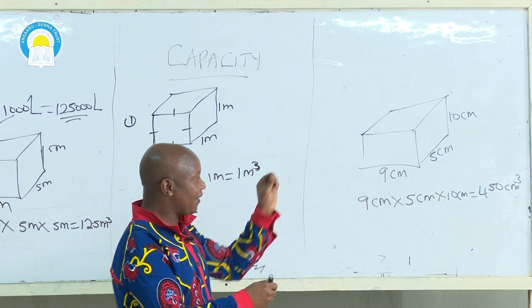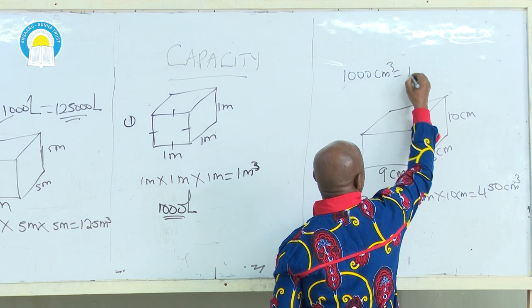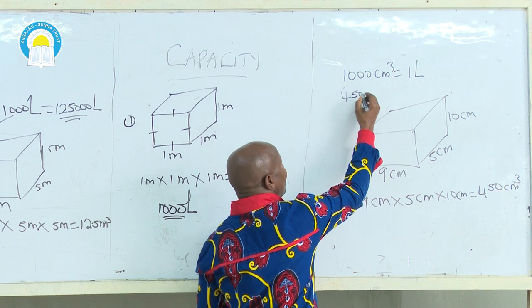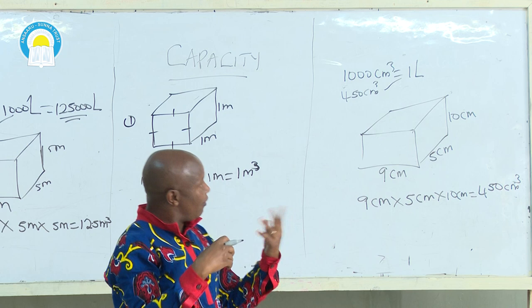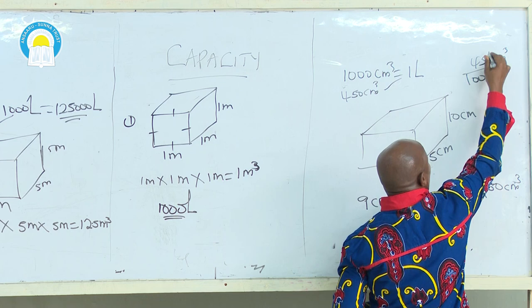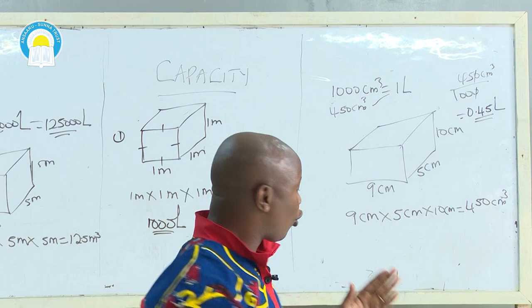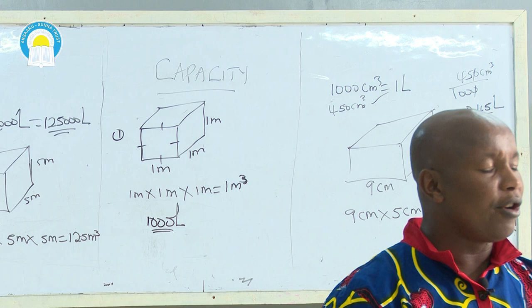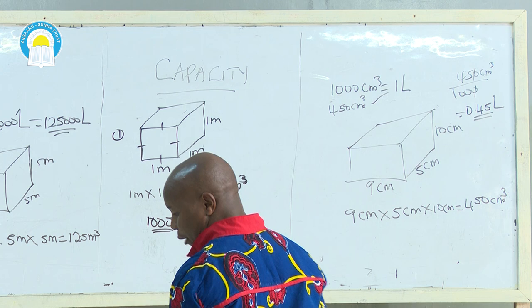A question will be posed: what is the capacity of the same container? To convert cubic centimeters into liters, we divide by 1,000. We say that 1,000 cubic centimeters is equivalent to 1 liter. So for 450 cubic centimeters, to convert cubic centimeters into liters, always divide by 1,000. Our answer is 450 ÷ 1,000, which equals 0.45 liters.